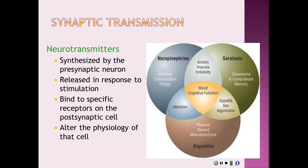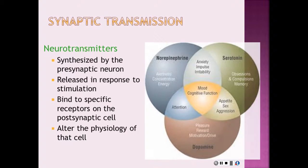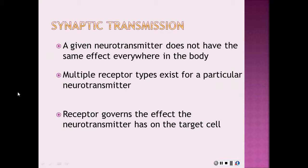Neurotransmitters are synthesized by the presynaptic neuron, then released in response to a particular stimulation. When released, they cross the synaptic cleft and bind to the receptors on the postsynaptic cell, altering the physiology of that cell. A given neurotransmitter does not have the same effect everywhere in the body — multiple receptor types exist for a particular neurotransmitter. For example, there are 14 receptor types for serotonin.